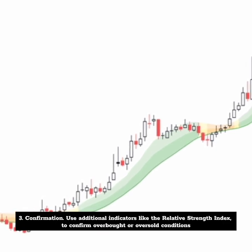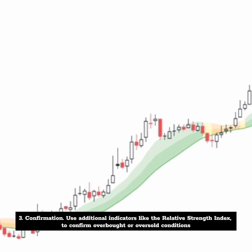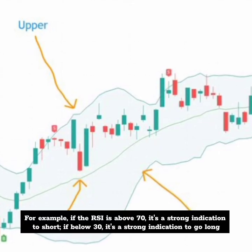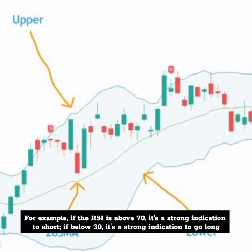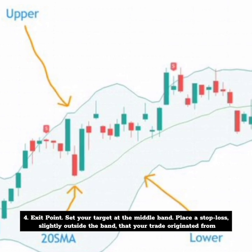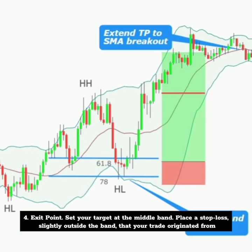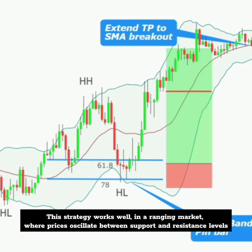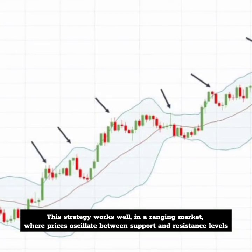For confirmation, use additional indicators like the Relative Strength Index to confirm overbought or oversold conditions. For example, if the RSI is above 70, it's a strong indication to short; if below 30, it's a strong indication to go long. For the exit point, set your target at the middle band and place a stop loss slightly outside the band that your trade originated from. This strategy works well in a ranging market where prices oscillate between support and resistance levels.